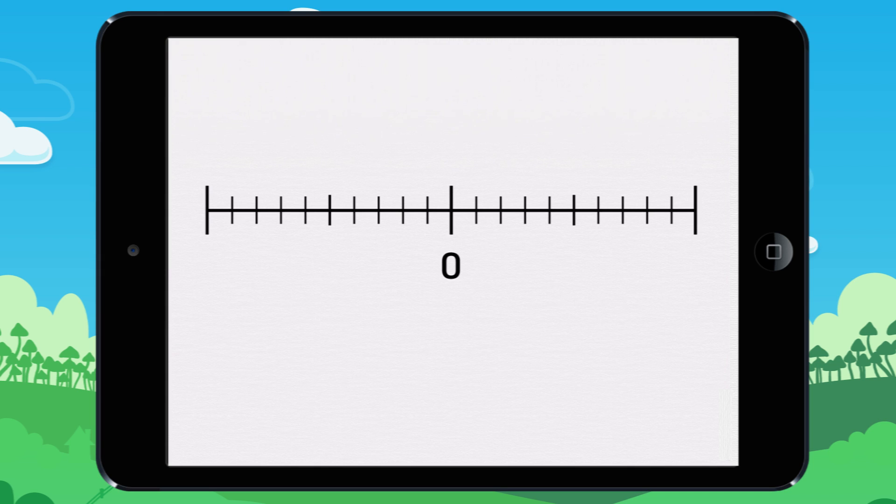Look carefully at this number line. There is a zero at the center of it. If you count by ones from left to right, you get to 10.